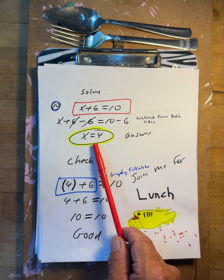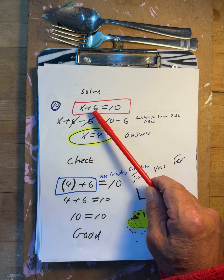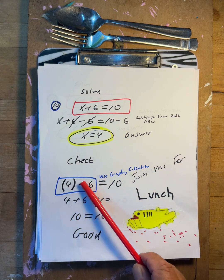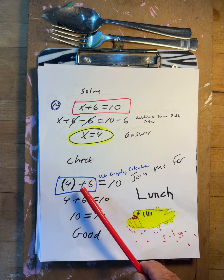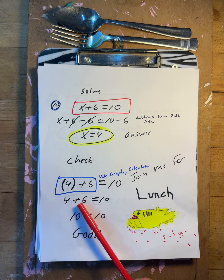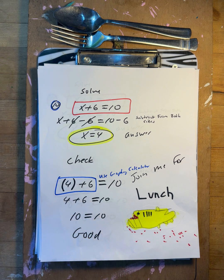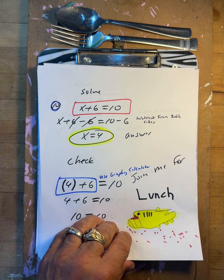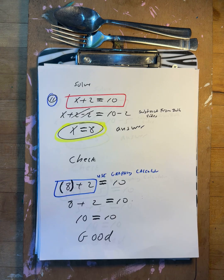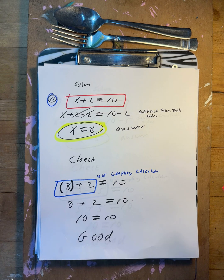x plus six equals ten. Minus six, minus six — those are gone. That gives you x equals four. Does it work? Put four back in: four plus six — take the parentheses off — is ten. It matches.